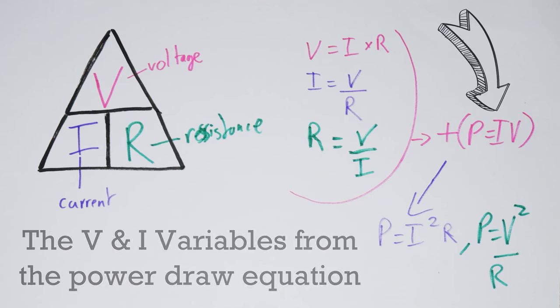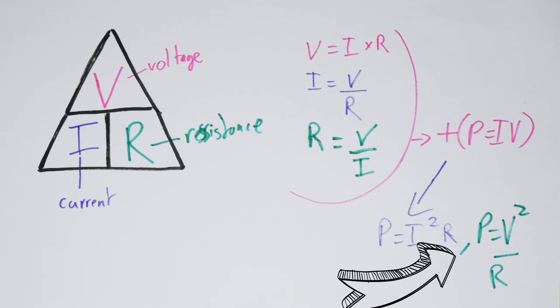For example, we can substitute the V or I variables here in Ohm's law and get equations such as these. This makes calculations for your circuits and projects easier and more flexible.